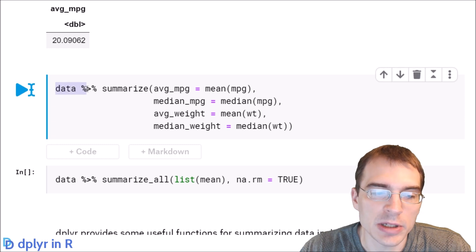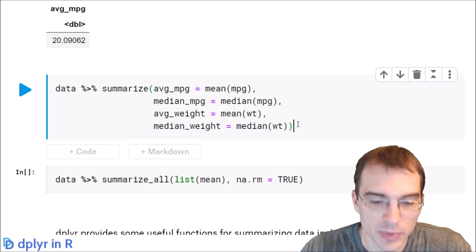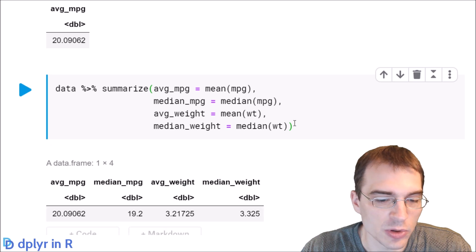So for the second call, we're piping data to summarize. This time, we're going to make a few different summaries. We're going to get the average of the MPG column, but then comma, we're going to do another summary. We also want the median of the MPG column. We're also going to get the average of the weight column, call that average weight, and the median of the weight column. So when we run this, we'll have four different summary statistics in four different columns.